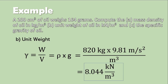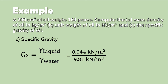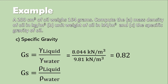Lastly, for specific gravity, we use water as the reference liquid. Using unit weight: 8.044 kilonewton per cubic meter divided by 9.81 kilonewton per cubic meter gives a specific gravity of 0.82. Verifying with mass density: 820 kilogram per cubic meter divided by 1,000 kilogram per cubic meter also gives 0.82.